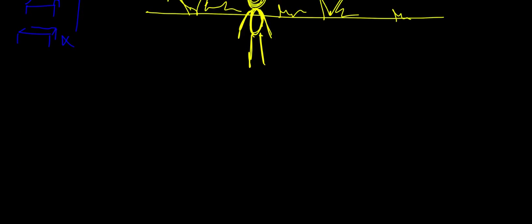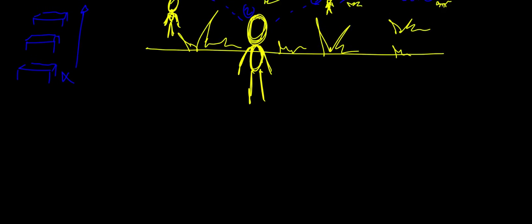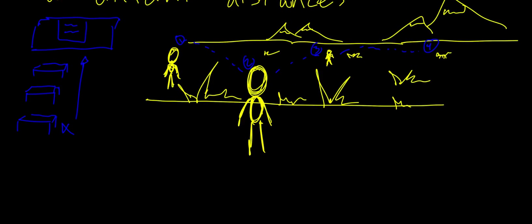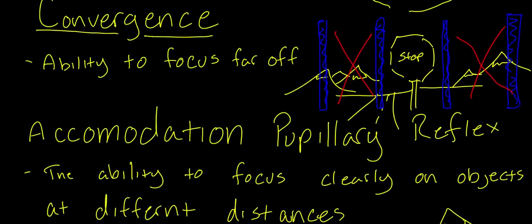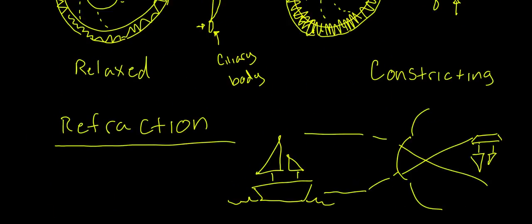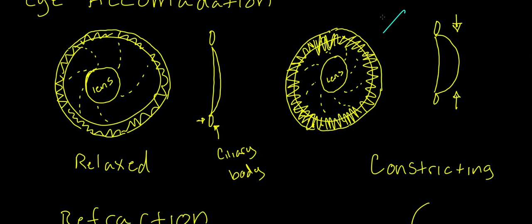And that pretty much covers all of the eye. The only other one he had on there was a photopupillary reflex, and that is just the fact that your eye constricts when a bunch of light hits it from all directions. It just constricts, and if there's no light, it relaxes. That's pretty much the only thing to cover there. So that covers all the eye. I hope that helps you guys out.